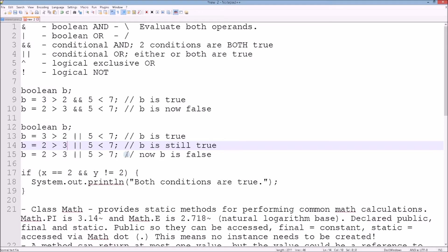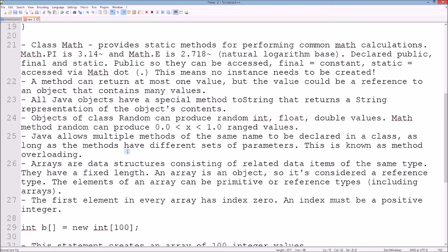Let's scroll down and continue. We saw class Math, which provides static methods for performing common math calculations. We have Math.PI - it's 3.1415926... and Math.E is 2.718, which is the natural logarithmic base. The class Math is declared public, final, and static.